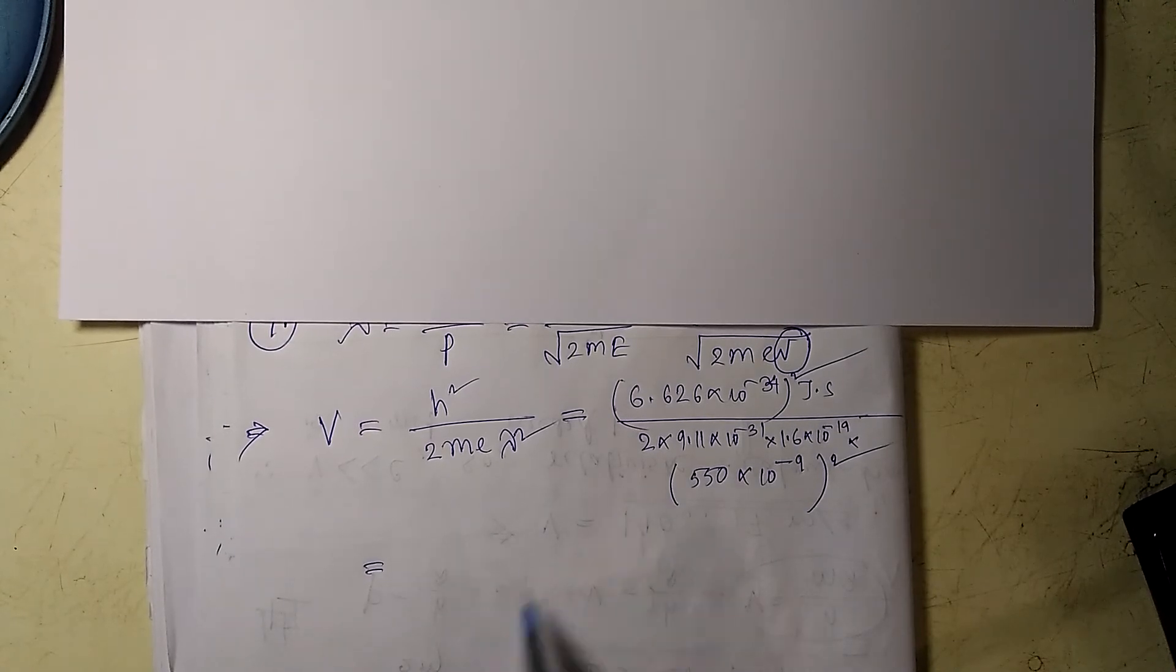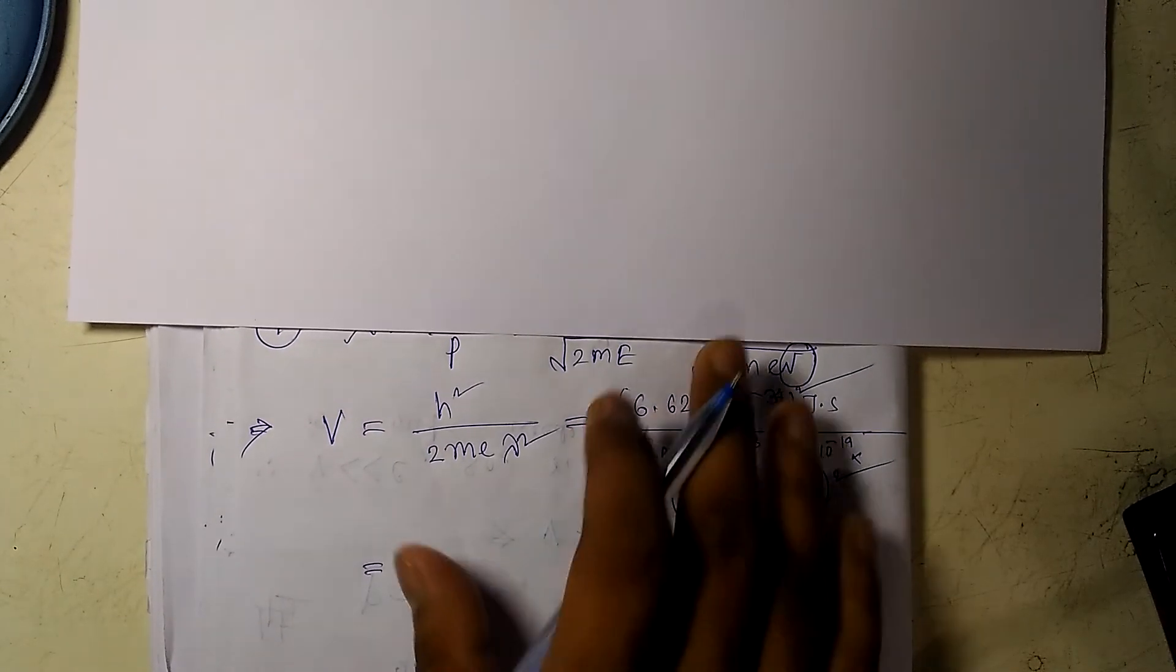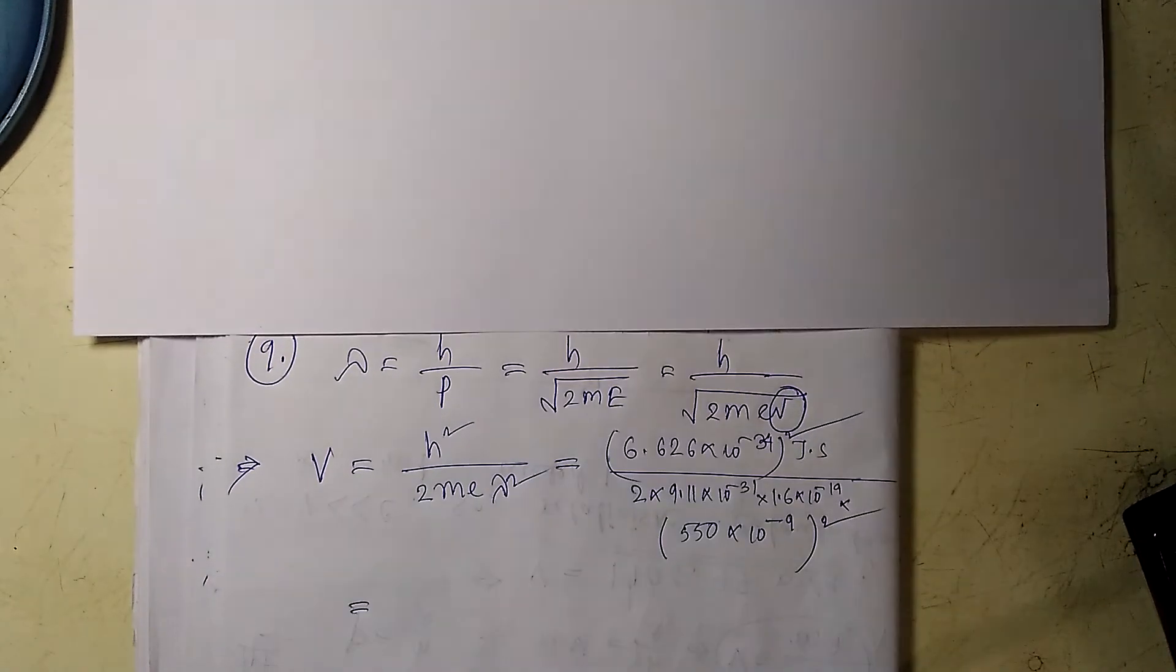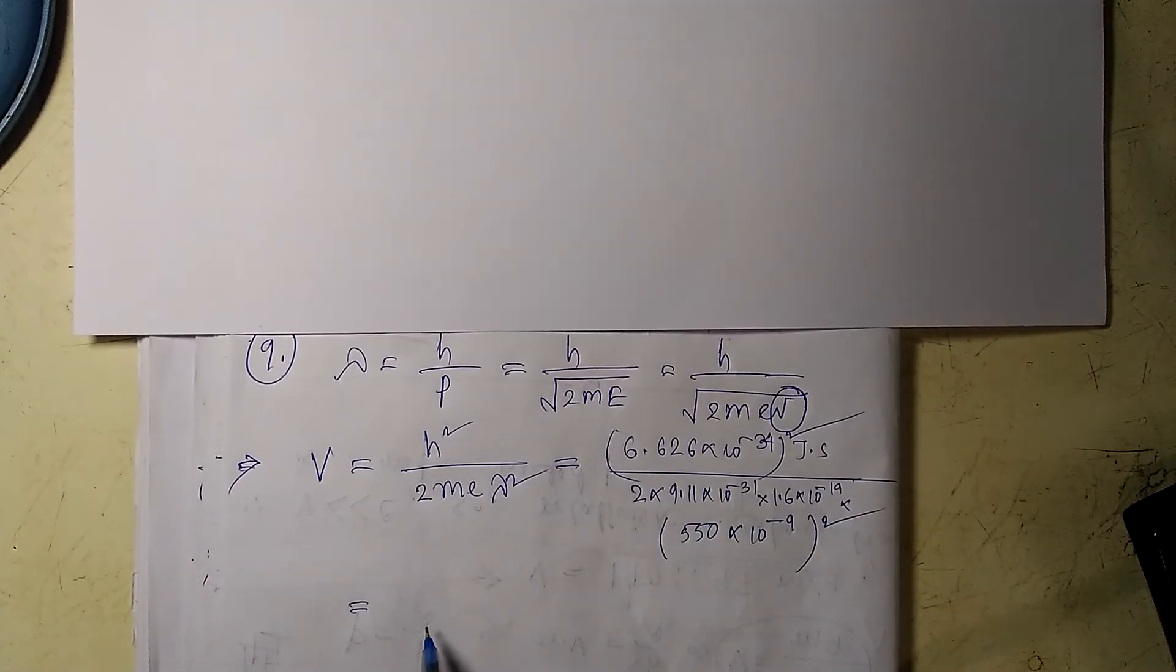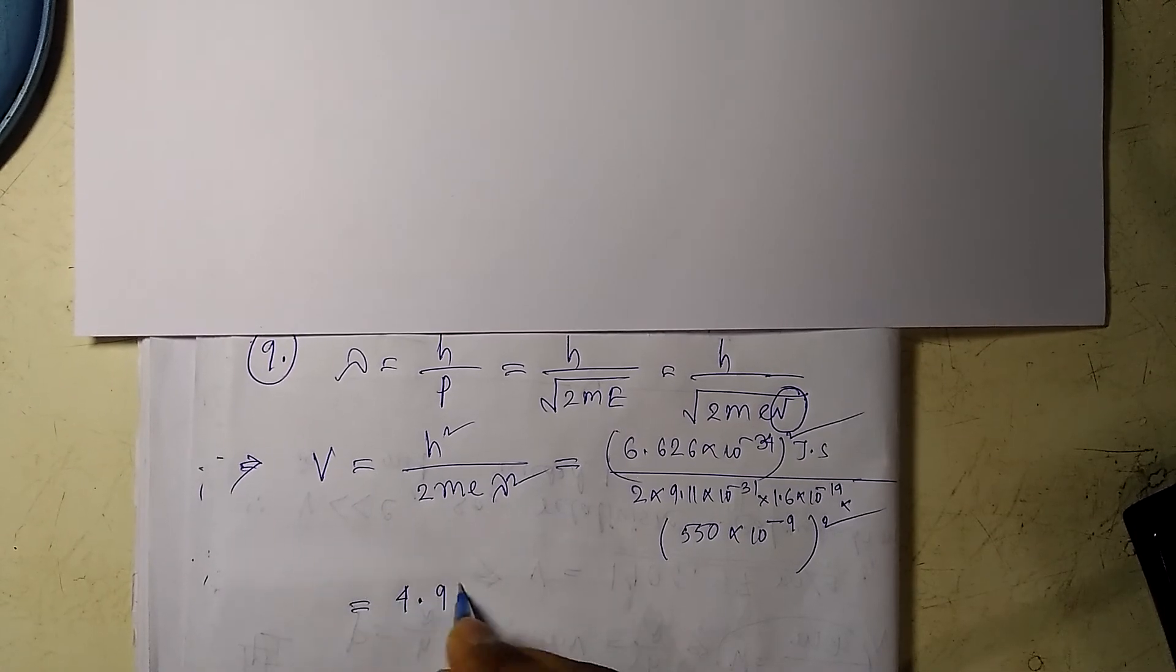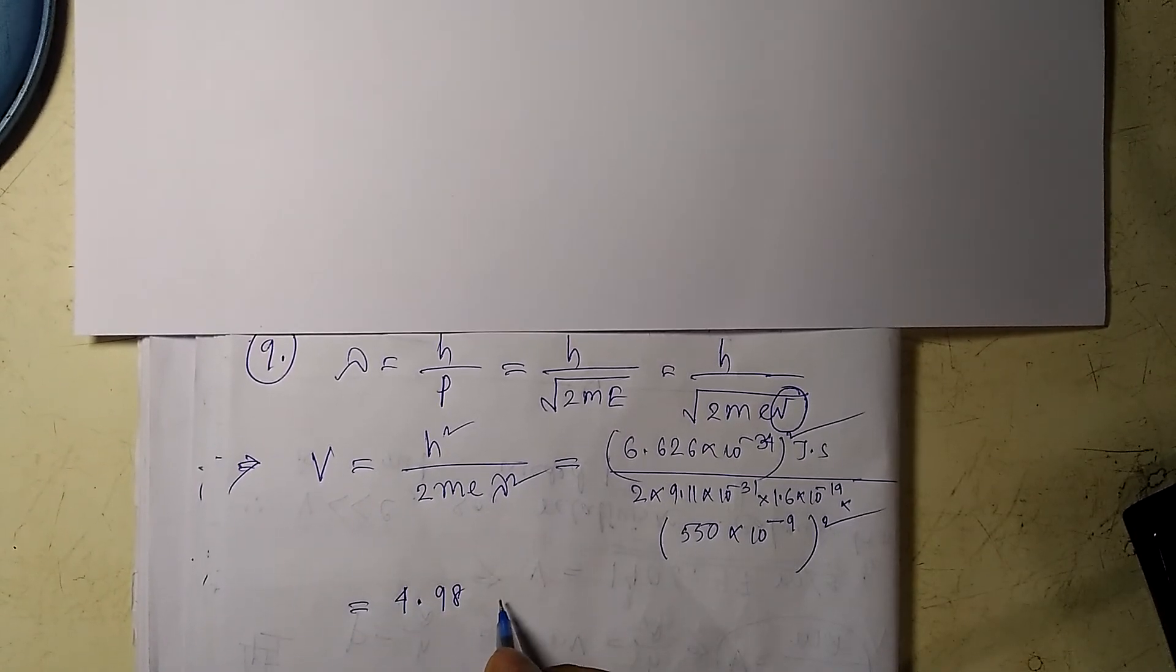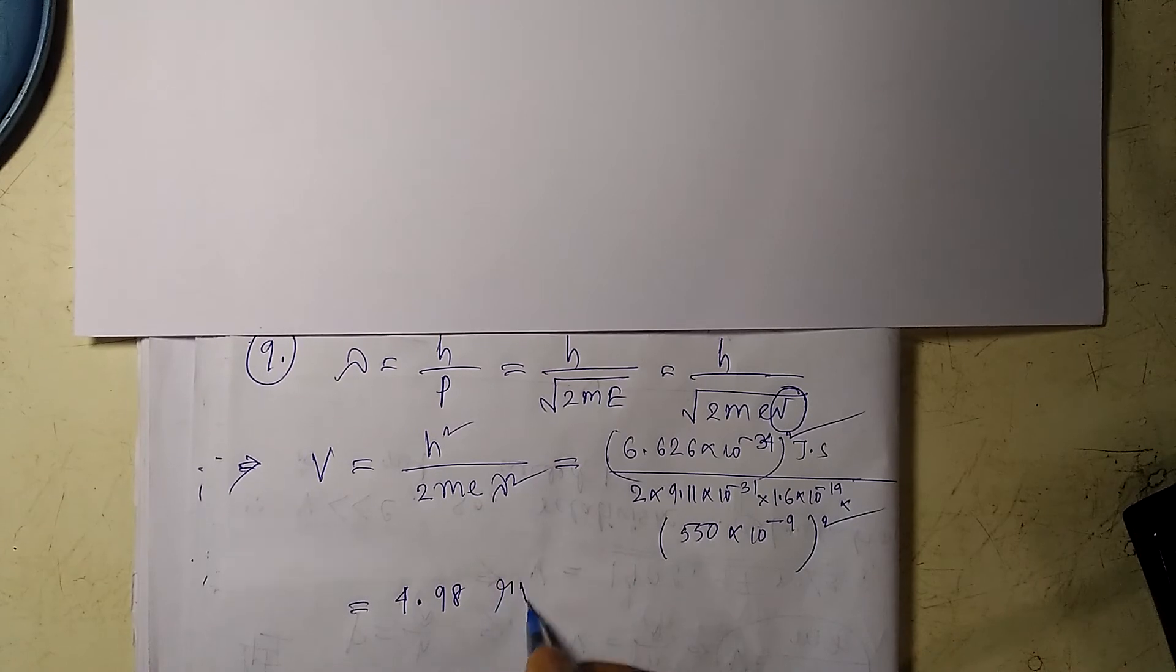So if you do the calculation, you will find the value V is roughly equals to 4.98, which I have calculated before, microvolts.